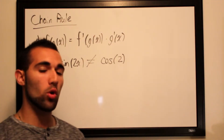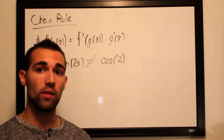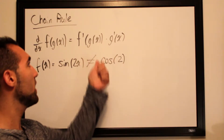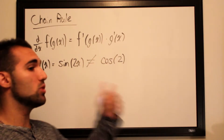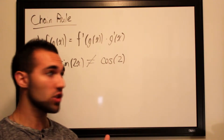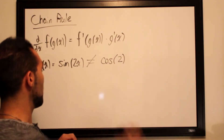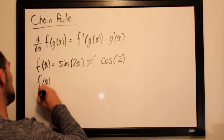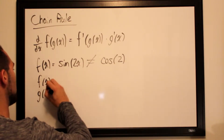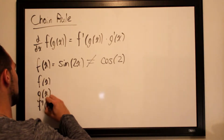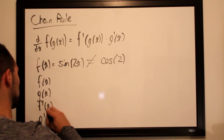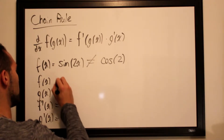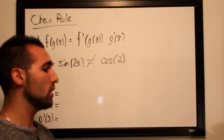What we'll be doing to take the derivative of these composite functions is following this format: we take the derivative of the outer function. We split it up into f(x), g(x), f'(x), and g'(x), just as we did for our product rule and quotient rule.